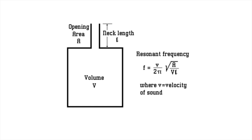The Helmholtz resonator consists of an enclosed volume with an opening and a neck. It is widely used to achieve adequate absorption at lower audio frequencies. It has a great advantage in practice because you can tune it to a problematic frequency and solve specific problems. You can change the volume of the air cavity, the length of the neck, or the opening area to change the resonant frequency, so you can calculate the exact frequency you need to work.